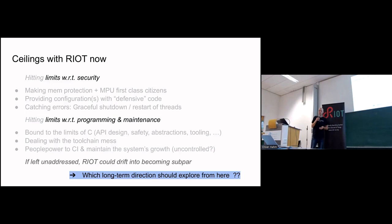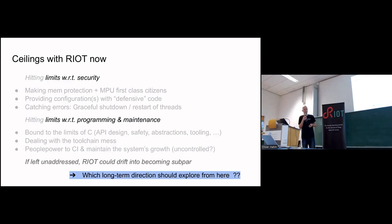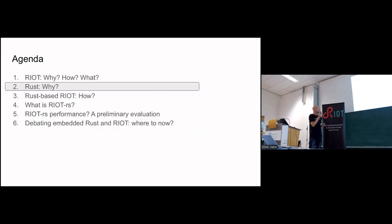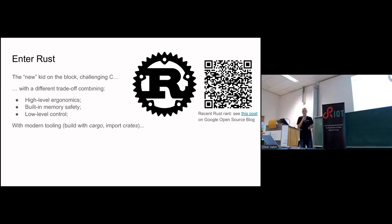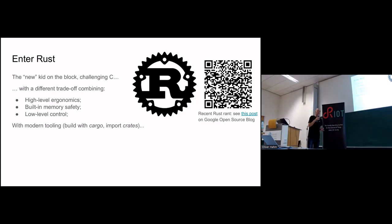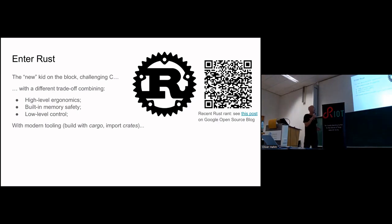So what kind of long-term direction should we explore to address these issues? That was the question we were thinking about in the research project. That's where Rust comes in — which is picking up steam quite actively. I won't give you the full rundown on why it's so much better than C, but if you want, go to the recent post from the Rust blog which does a very good job at that.